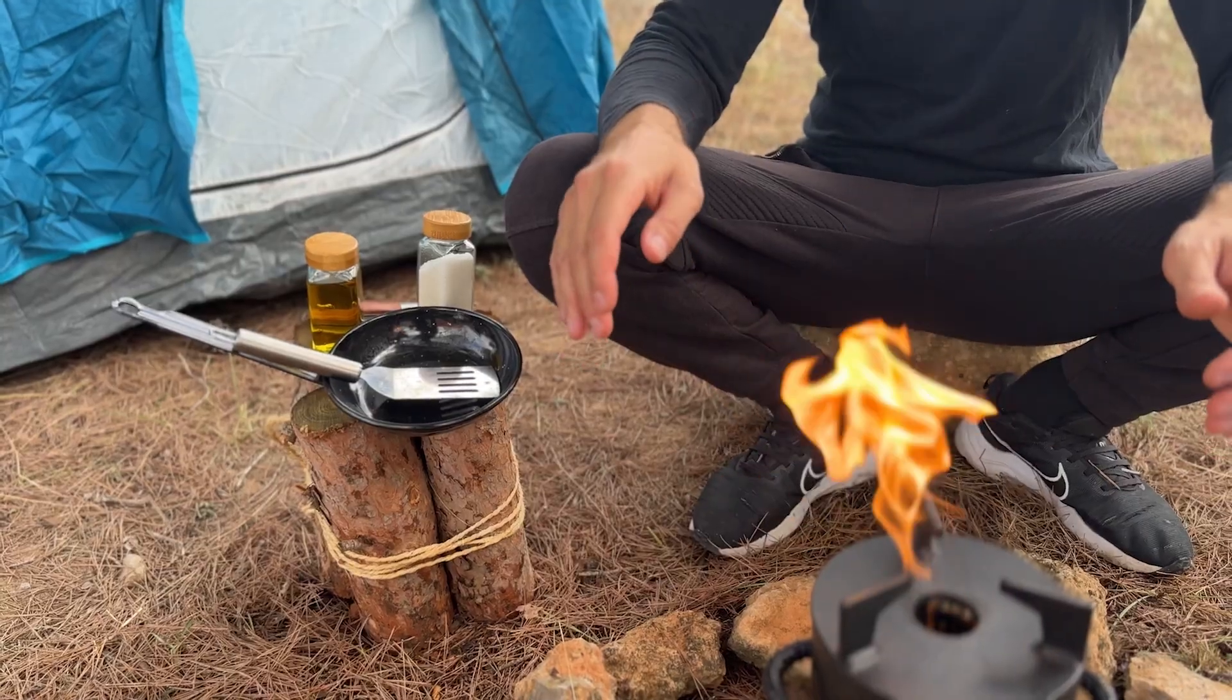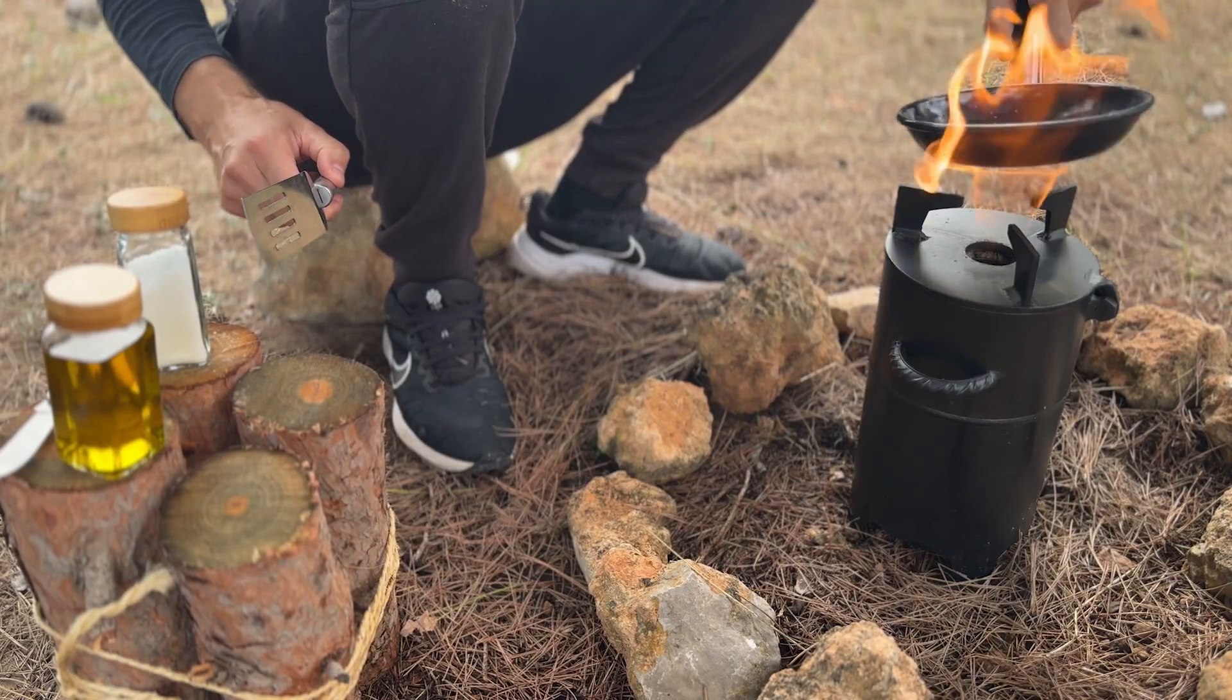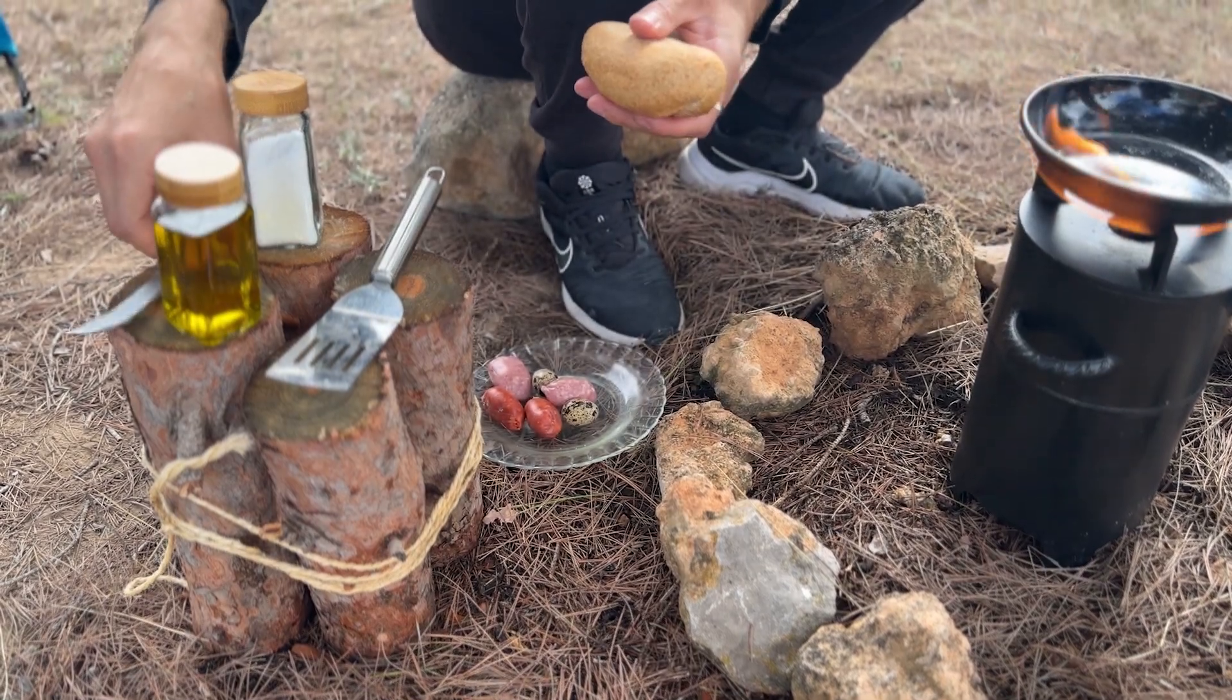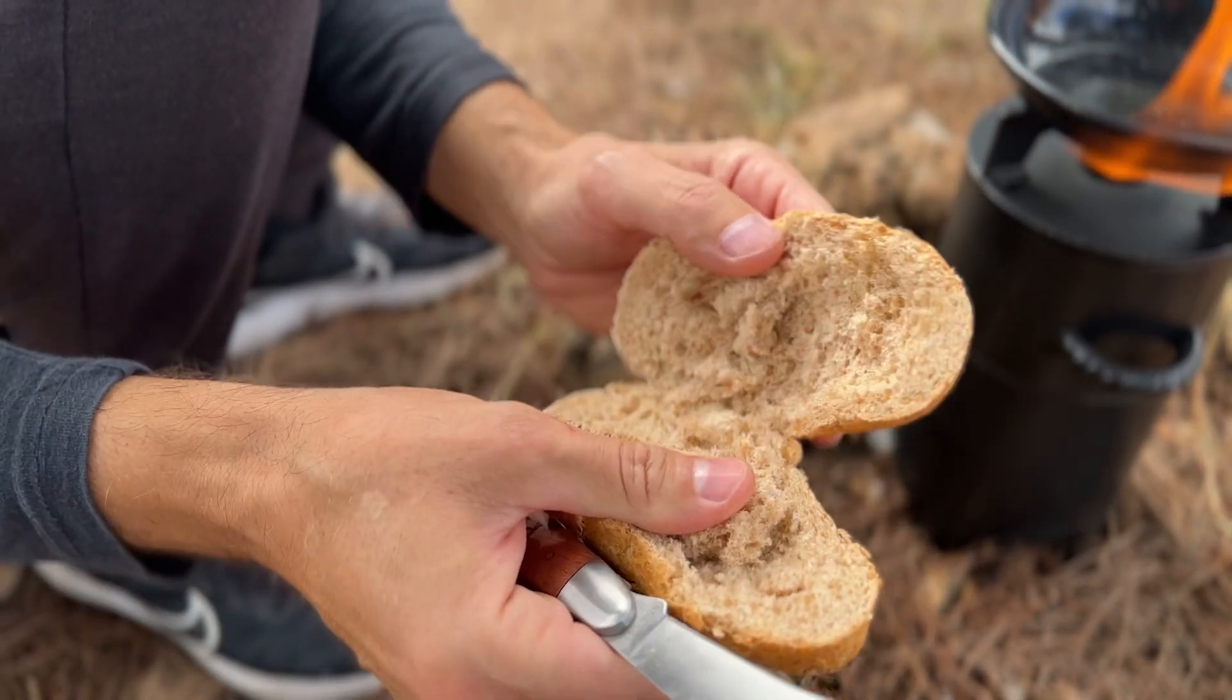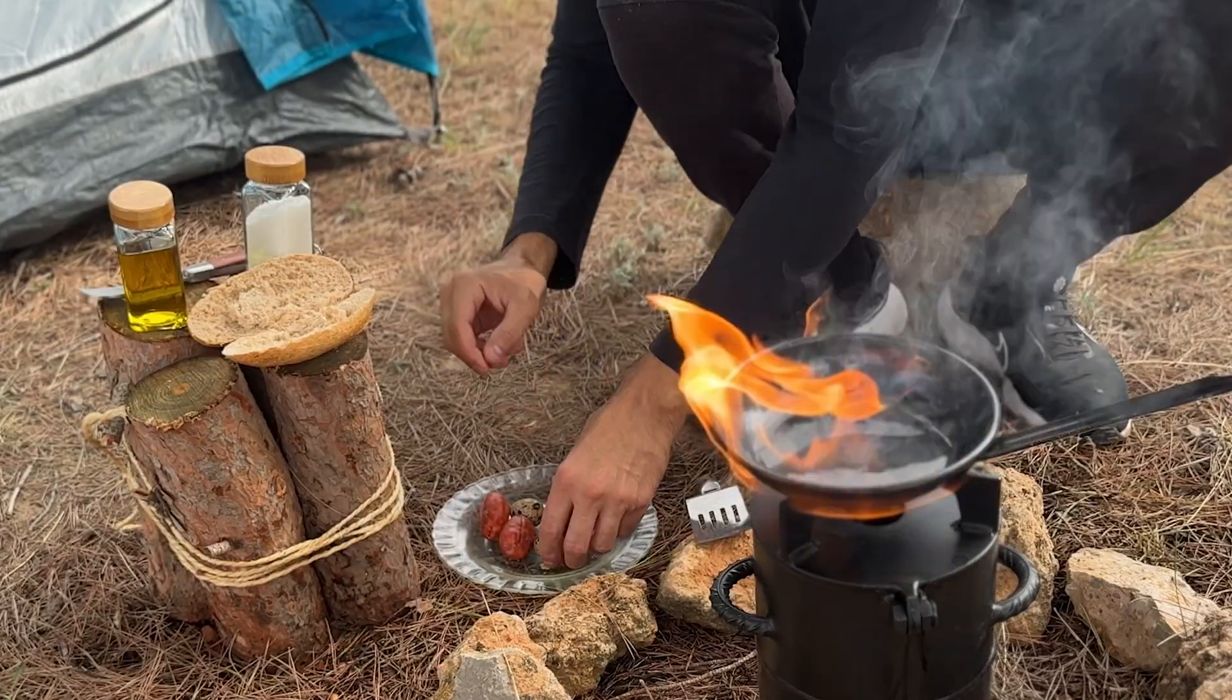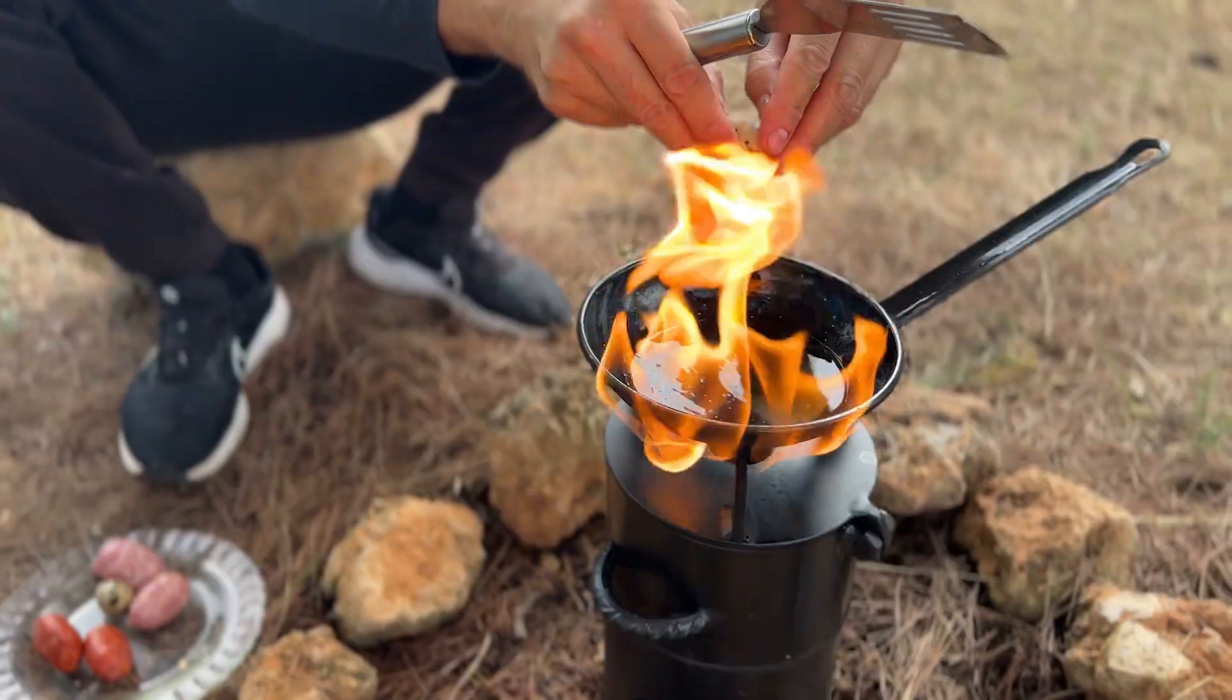These gases rise and mix with the air entering through the lower hatch. This mixture ignites and burns with a clean, powerful flame. In a normal campfire, much of the heat and fuel is wasted in the form of smoke and unburned gases. But in our pyrolytic stove, that smoke is burned again, utilizing almost all of the wood's calorific value.